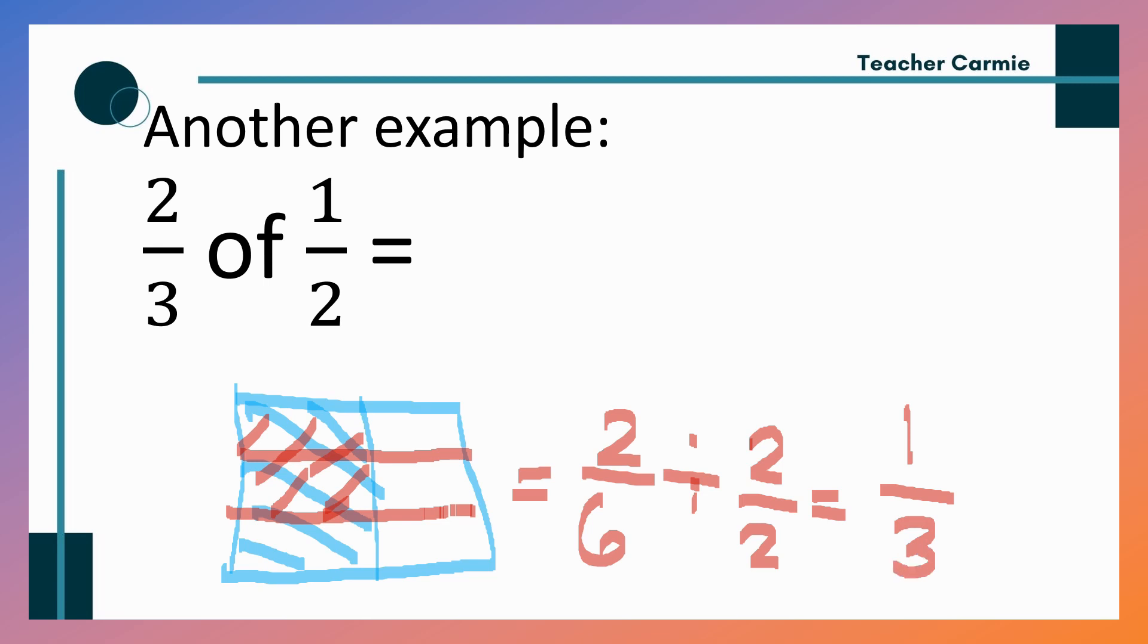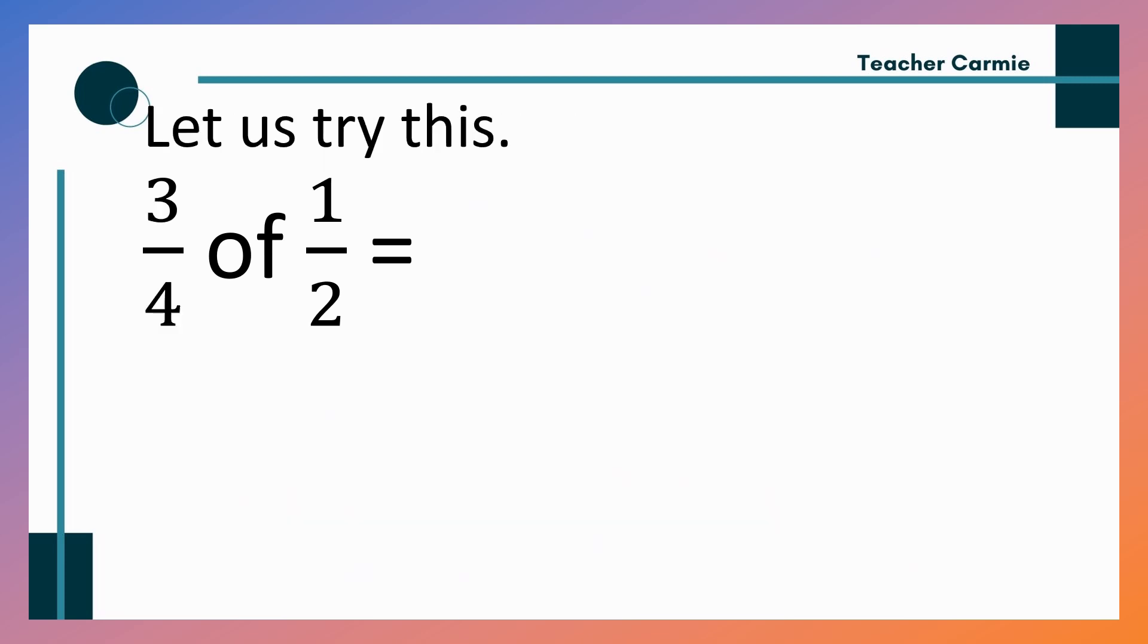So, let us try. 2 third of means multiplication times 1 half. So, again, rule natin sa multiplication of fractions. Numerator to numerator, denominator to denominator. 2 times 1? 2. 3 times 2? 6. Or, 1 third. Same answer. Di ba?